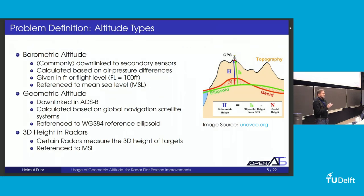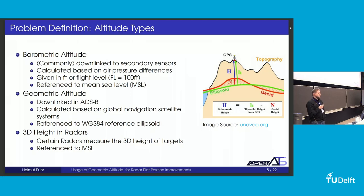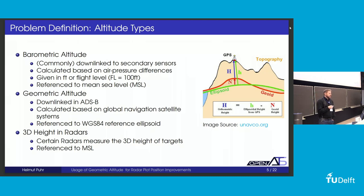We also need to talk about altitude types. For this work, we focus on three. The first is barometric altitude, commonly downlinked by secondary sensors as the Mode C code — calculated based on air pressure differences, given in feet or flight level, and referenced to mean sea level, basically the geoid. With ADS-B, we also get geometric altitude, downlinked and calculated based on GPS or other GNSS systems, referenced to the WGS-84 ellipsoid. Certain radar types, mostly military but also some civilian, can measure altitude themselves — called the 3D height, measured to the radar plane but referenced to mean sea level.